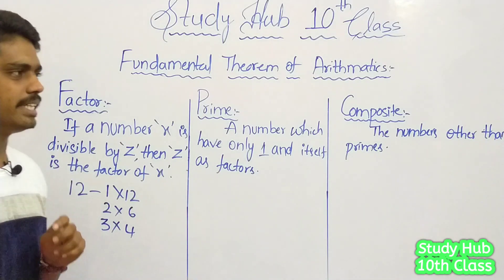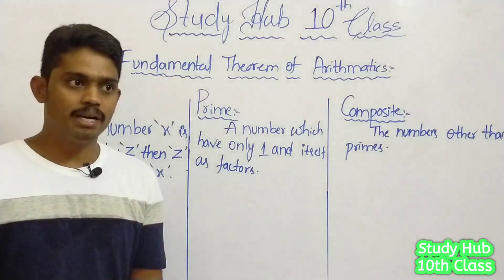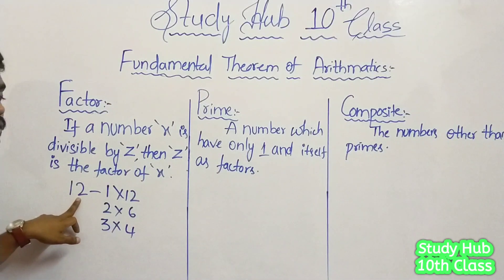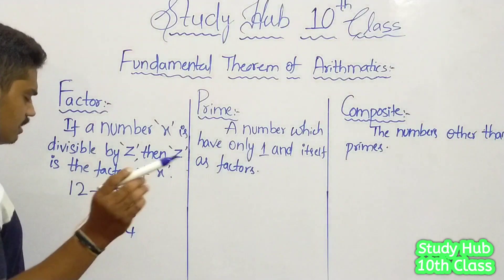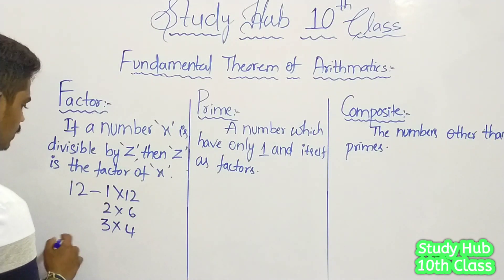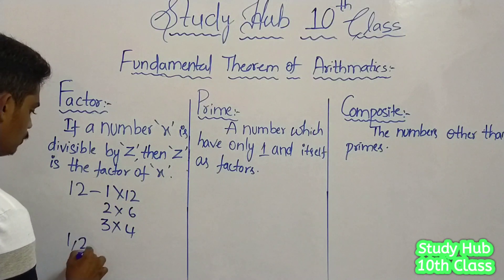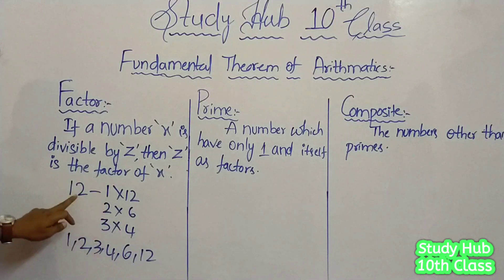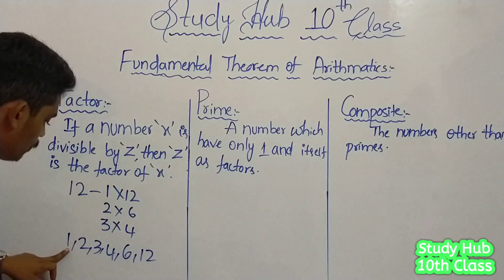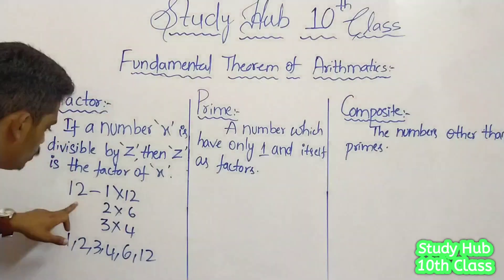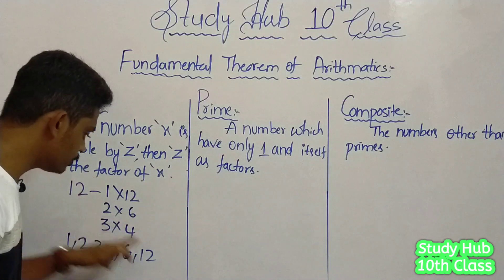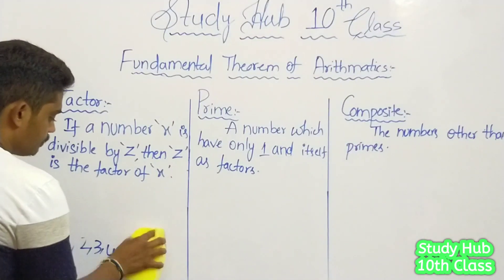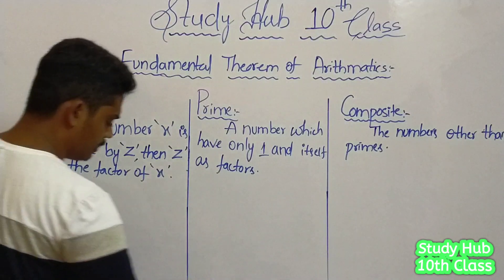Try to understand it easily, friends. All the numbers that when multiplied give you the original number will be the factors of that number. So the factors of 12 are 1, 2, 3, 4, 6, and 12. These are all the factors of 12.